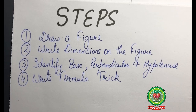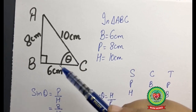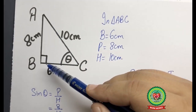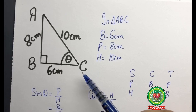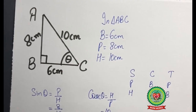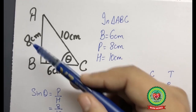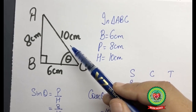Now we are going to discuss a sum based on finding all six trigonometrical ratios when three sides are given. Triangle ABC is a right-angled triangle with the right angle at vertex B, and the reference angle theta is given at vertex C. The dimensions of the three sides are given. Following our steps: I have already drawn a figure, and written the dimensions — AB equals 8 cm, BC equals 6 cm, and AC equals 10 cm.